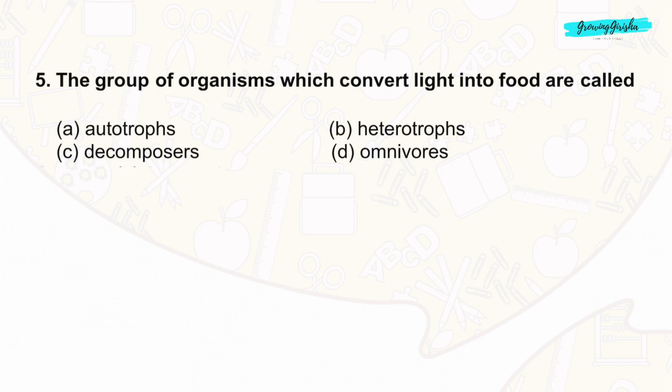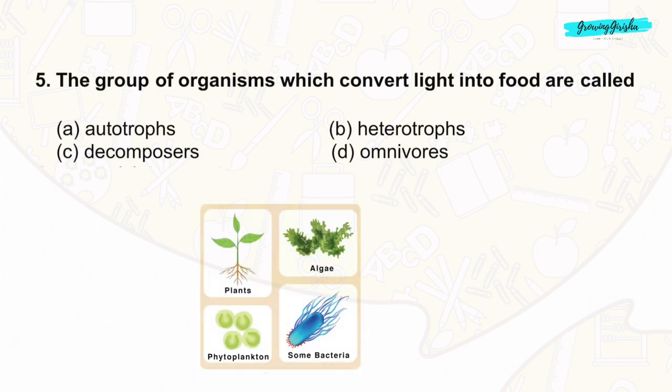Question 5: The group of organisms which convert light into food are called autotrophs. An autotroph is an organism that can produce its own food using light, water, carbon dioxide, or other chemicals. The correct answer is option A: autotrophs.